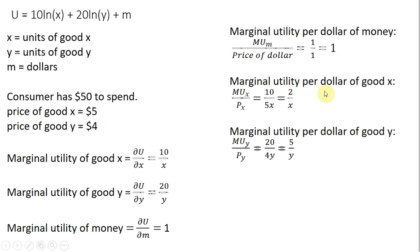The marginal utility per dollar of good x is going to be 10 divided by x, and that's all going to be divided by 5, and that will simplify to just 2 divided by x. And then lastly, the marginal utility per dollar of good y, the bang for the buck for consuming good y, is the marginal utility of y, which we've got over here, dividing it by the price of good y, will simplify down to 5 divided by y.